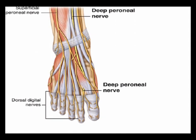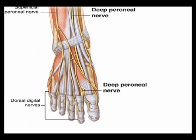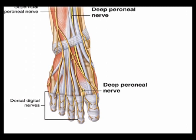The medial branch courses medially as it moves towards the first dorsal web space to supply its sensory innervation. Thank you.